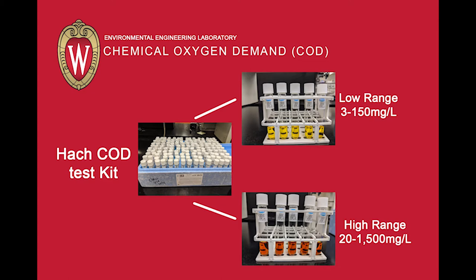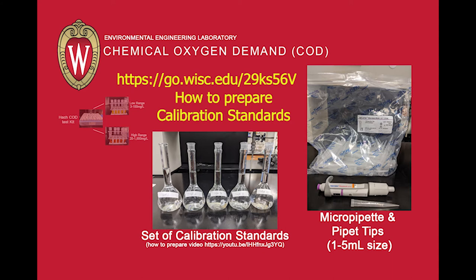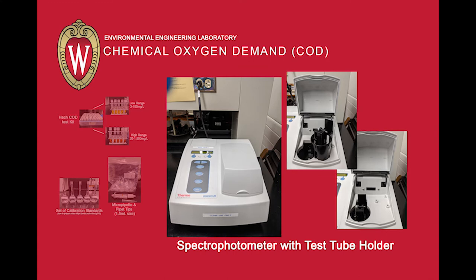You can see the starting color is a bit different between the two kits. You will also need a set of calibration standards, a micropipette, and some pipette tips. For this method, we will be using a larger 1 to 5 milliliter micropipetter and tips. In order to measure the results of our COD test, we will need a spectrophotometer. This lab instrument is used to measure absorbance or transmittance of light at a specified wavelength. This particular spectrophotometer uses a tungsten lamp to provide wavelengths in the visible spectrum. We will also use a special test tube holder accessory for easy analysis using the Hach test kit.